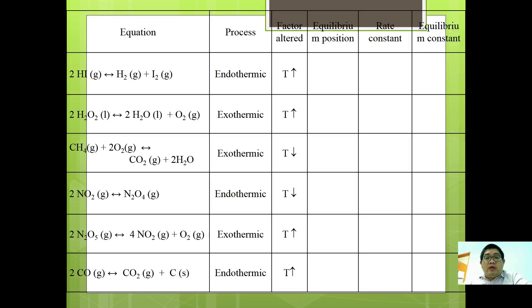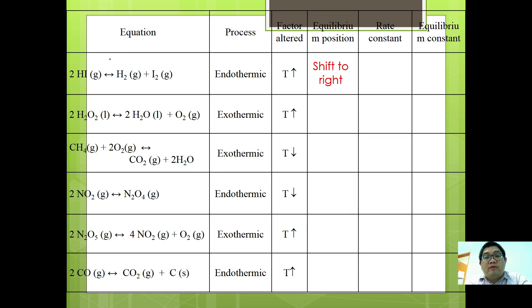Here are examples of how to determine the position of equilibrium. For 2HI gives H2 plus I2, the process is endothermic and temperature increases. Equilibrium will shift to the right since the forward reaction is endothermic. Both the rate constant and the equilibrium constant will increase.